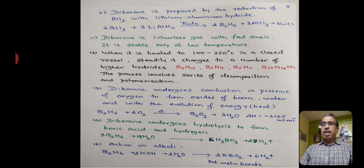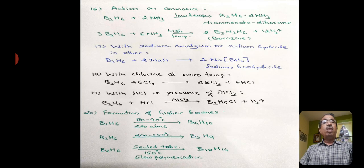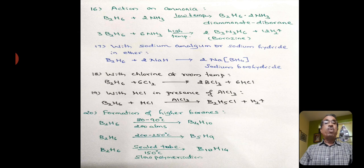Action on alkali. Diborane reacts with potassium hydroxide in presence of water to form potassium metaborate, formula KBO2, and hydrogen. In all these cases, the reactions are very important and you have to remember these reactions.